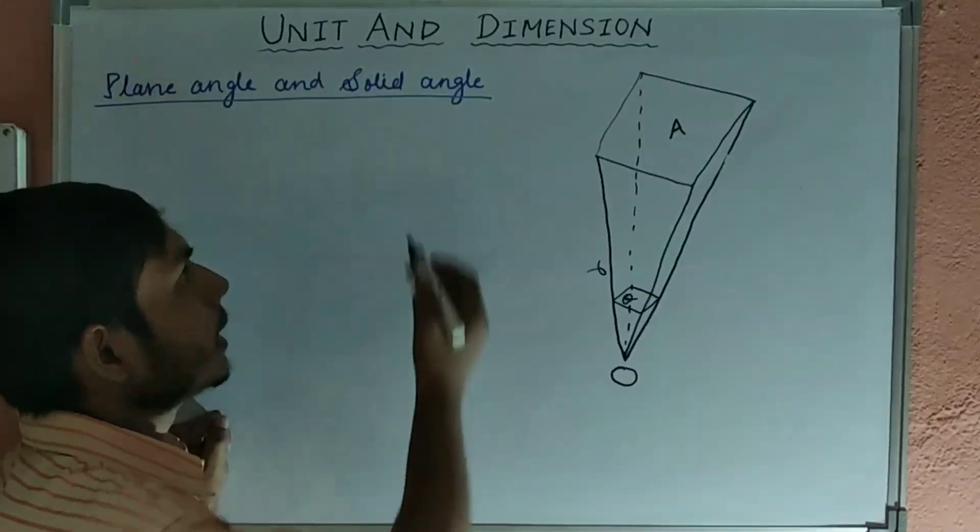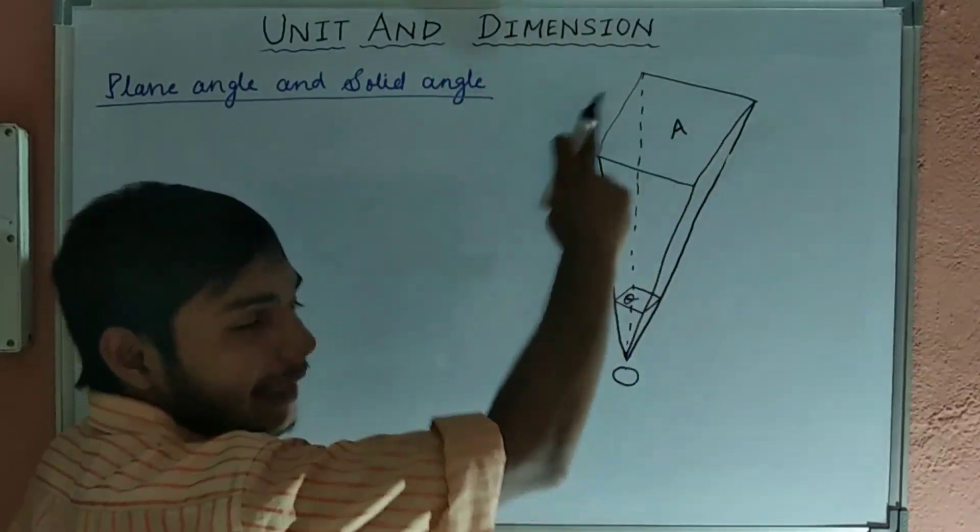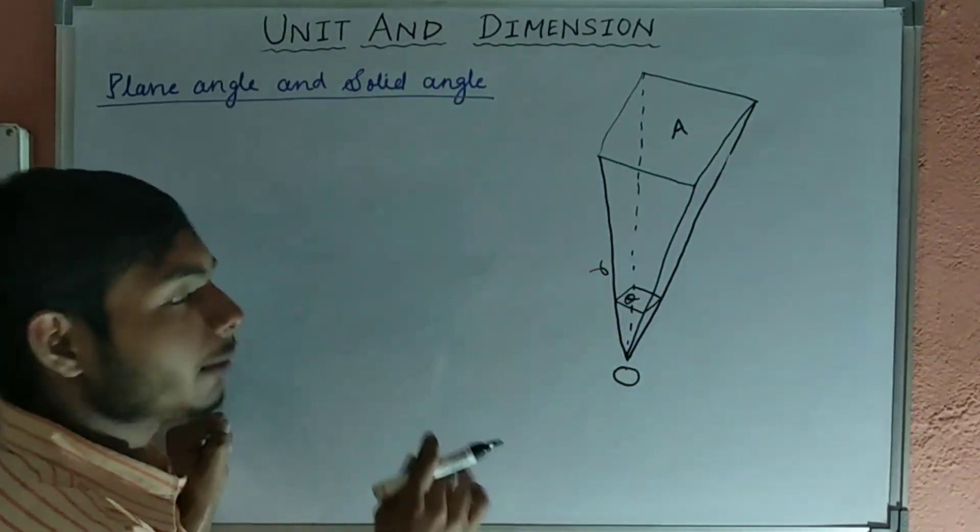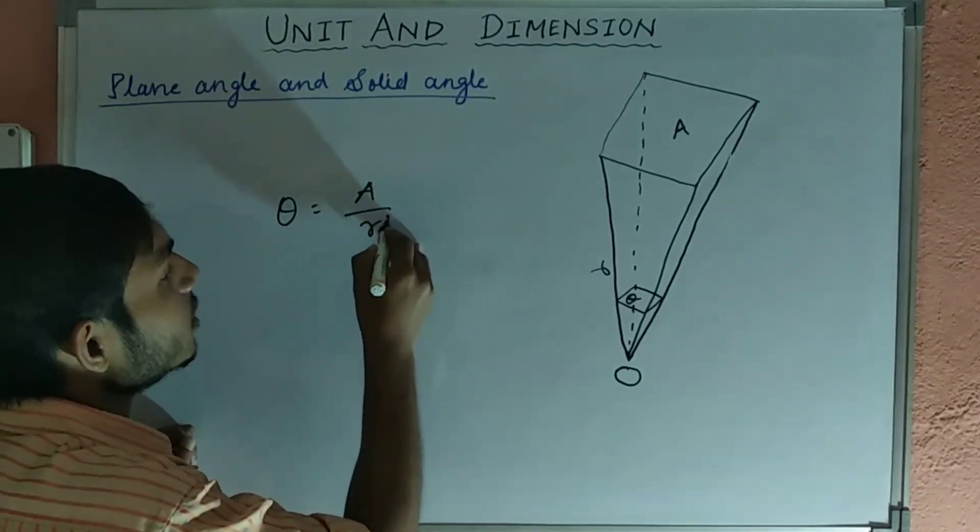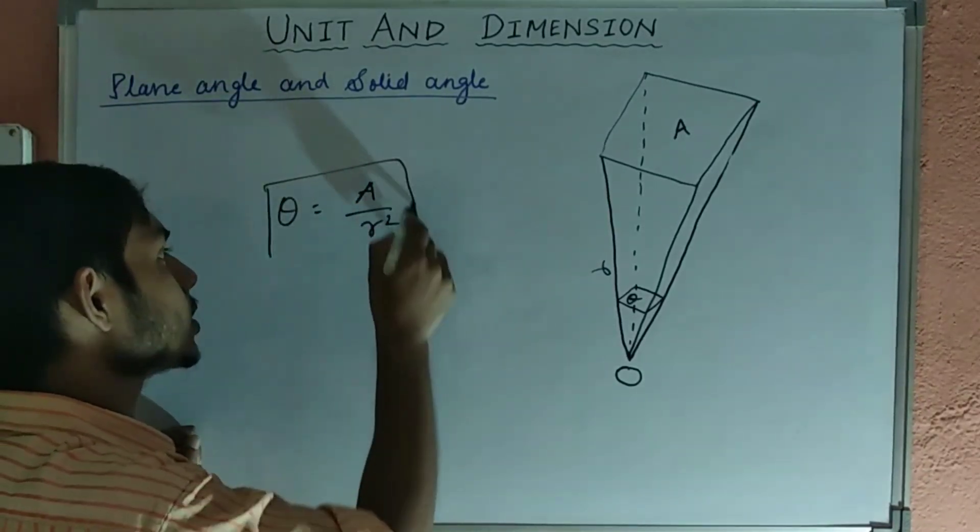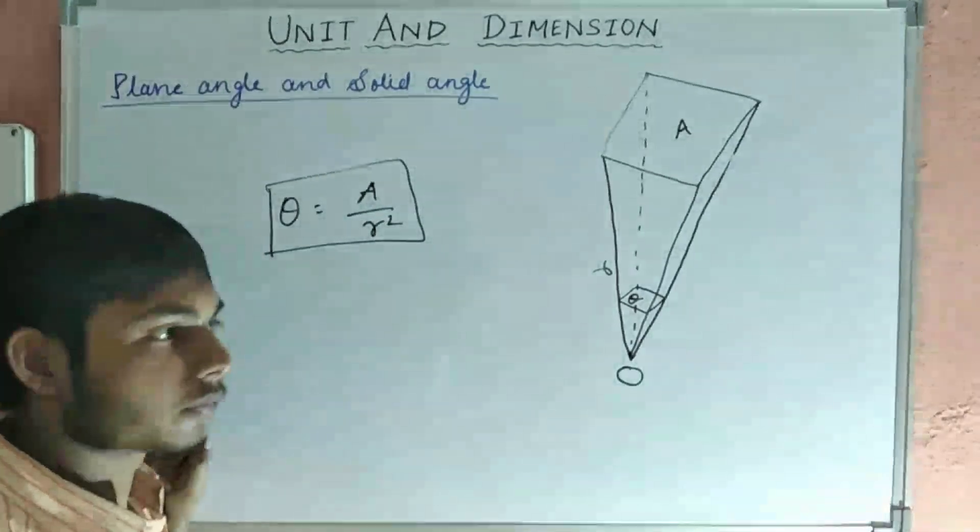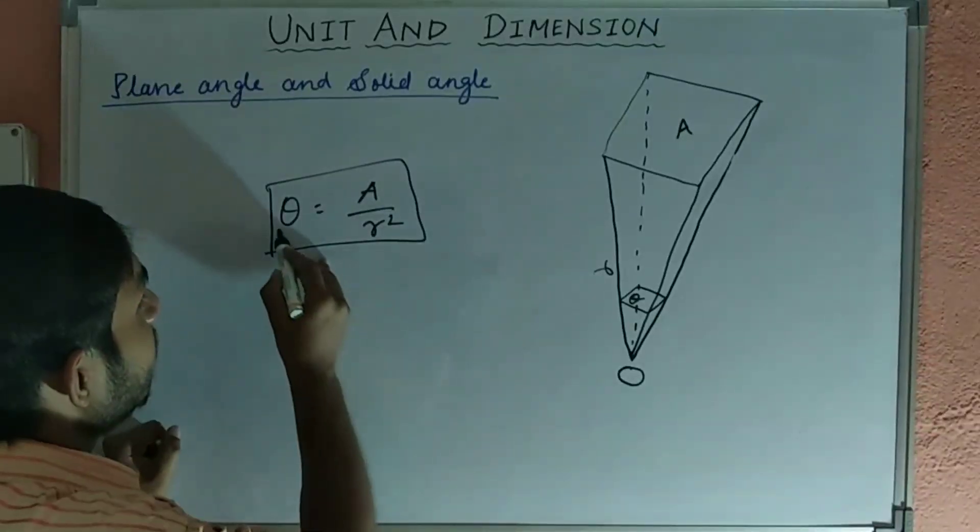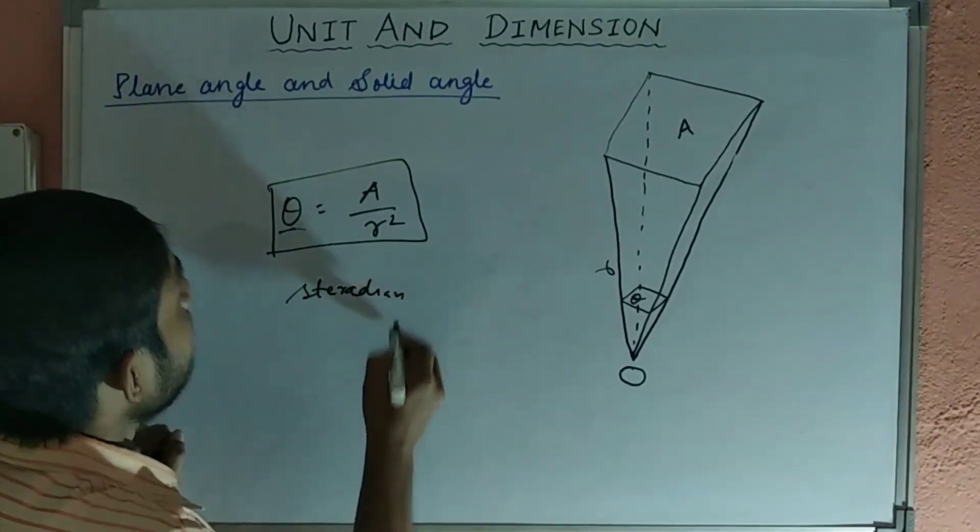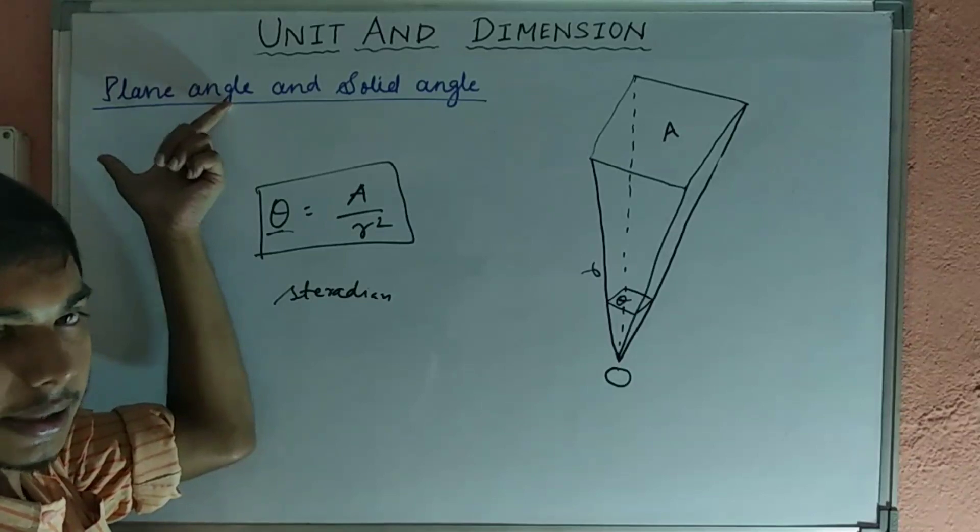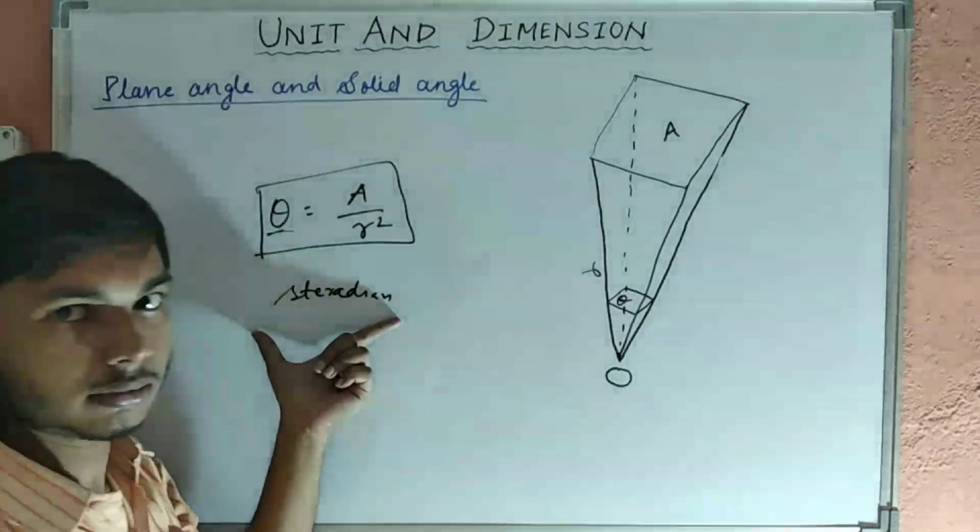Now, see, in solid angle, the relation between the radius, the areal arc, and the theta will be theta equal to area divided by radius square. This will be the relation of solid angle. Now, it will be measured in what? Steradian. Like the plane angle is measured in radian, this angle will be measured in solid angle in steradian.